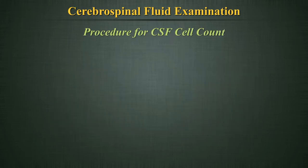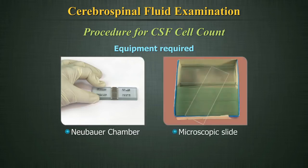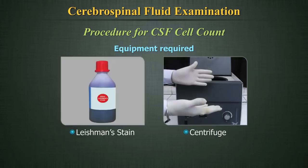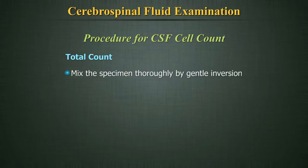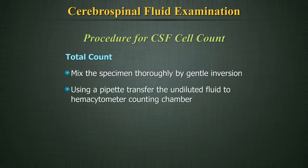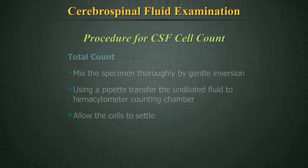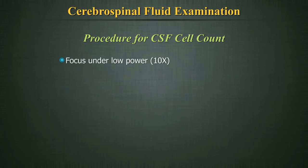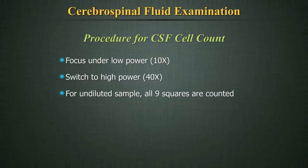Procedure for CSF cell count — Equipment required: Neubaur chamber, microscopic slides, Leishman stain, centrifuge. Total count: Mix the specimen thoroughly by gentle inversion at least 10 times. Using a pipette, transfer the undiluted fluid to a hemocytometer counting chamber. Fill both sides of the chamber using proper technique. Allow the cells to settle. Focus under low power and adjust the condenser and diaphragm for maximum visualization. Switch to high power or 40x. For an undiluted sample, usually all 9 squares are counted. Average the results from both sides of the chamber.